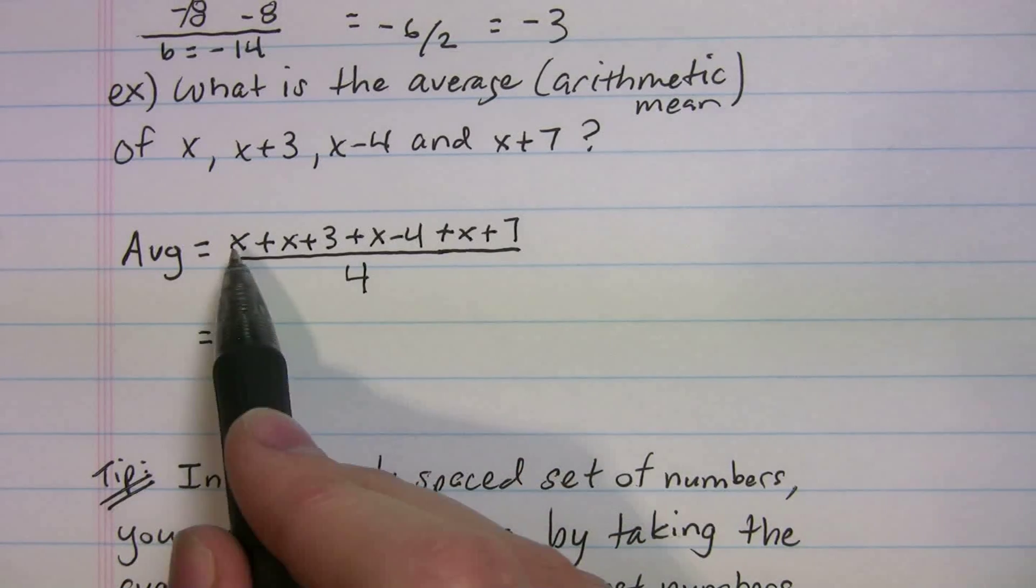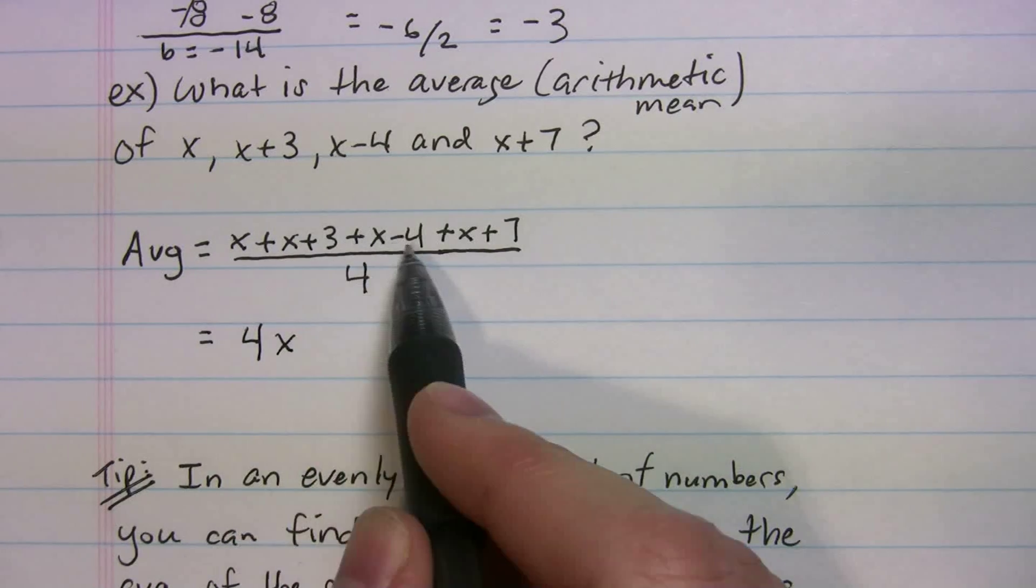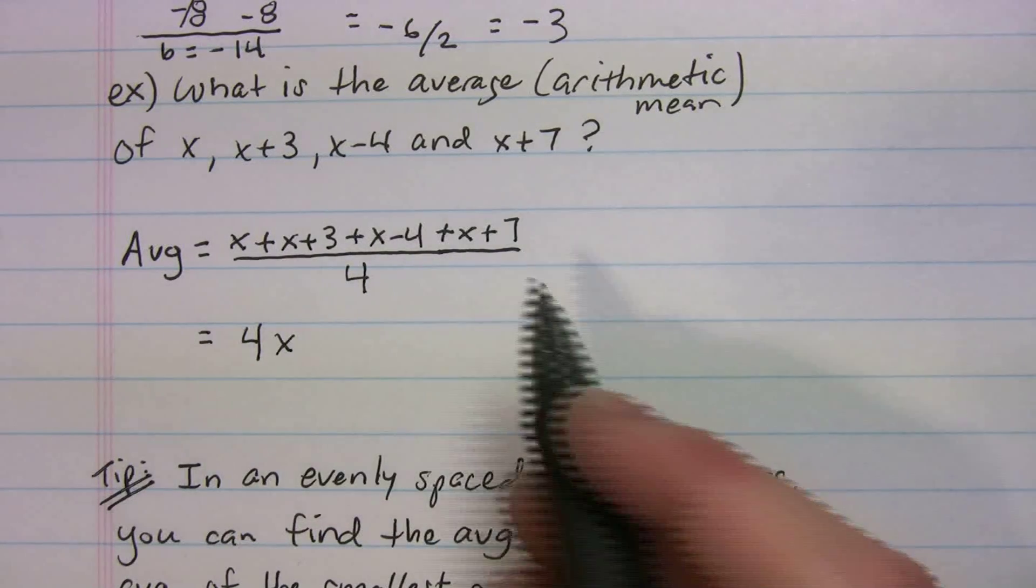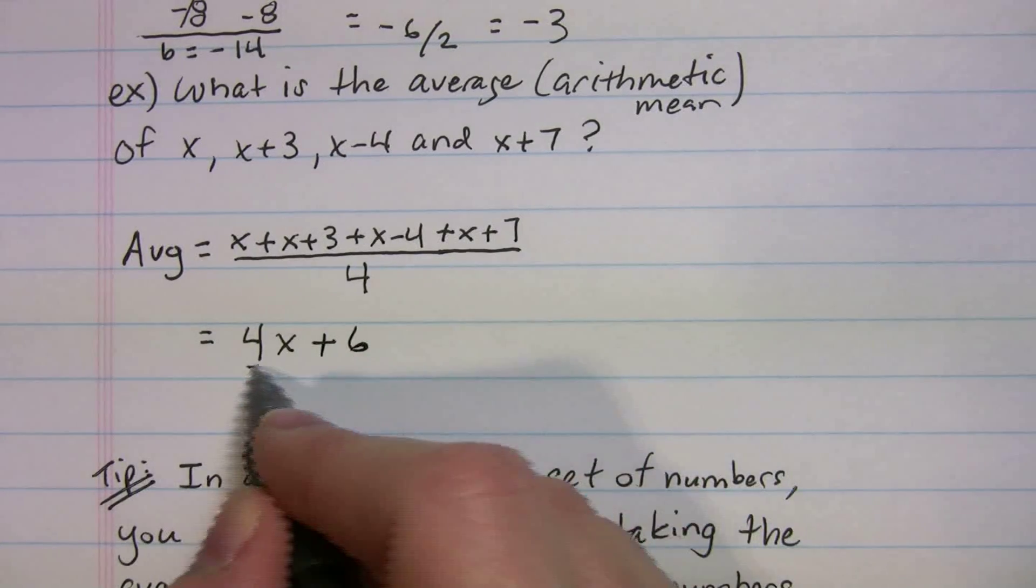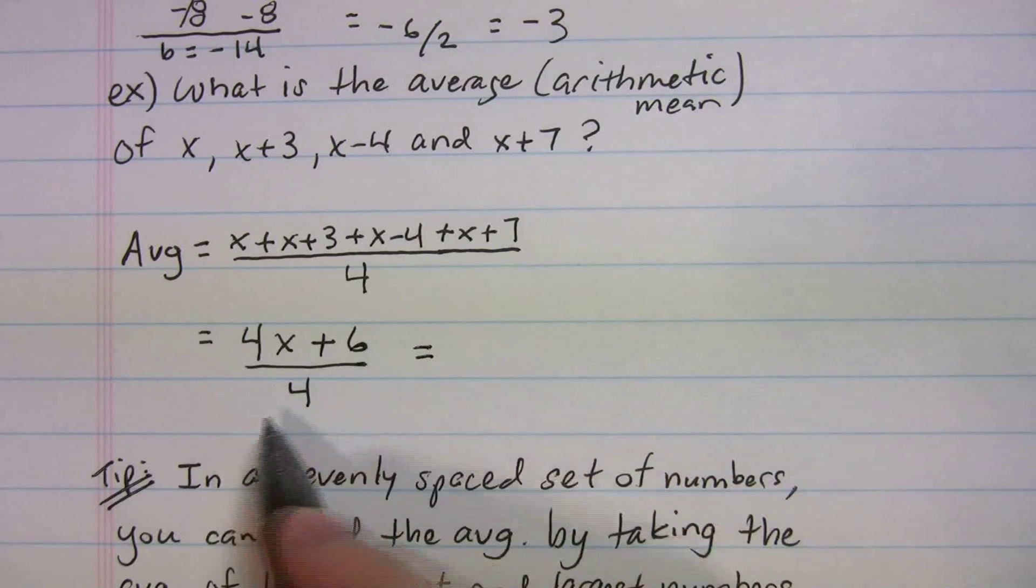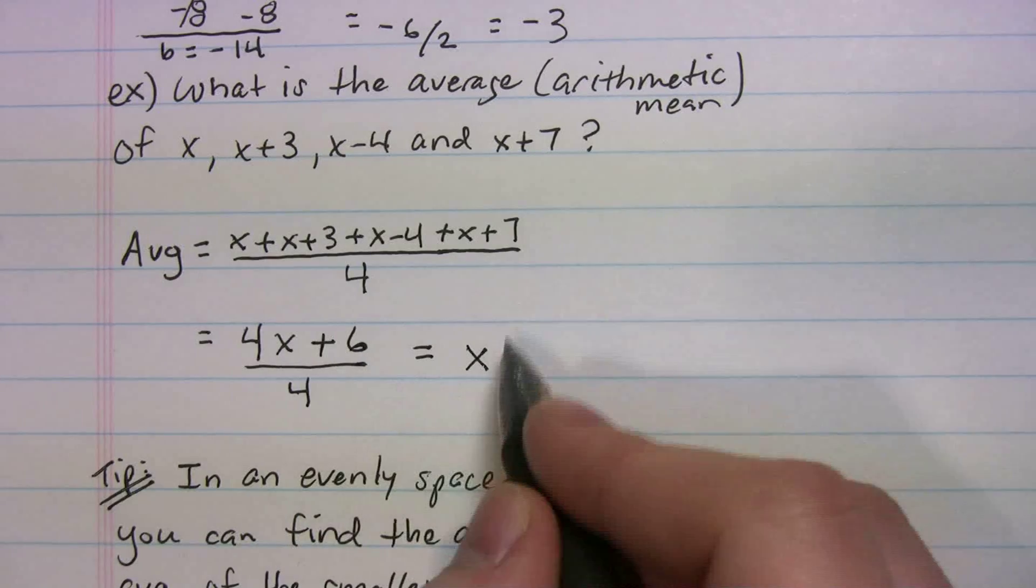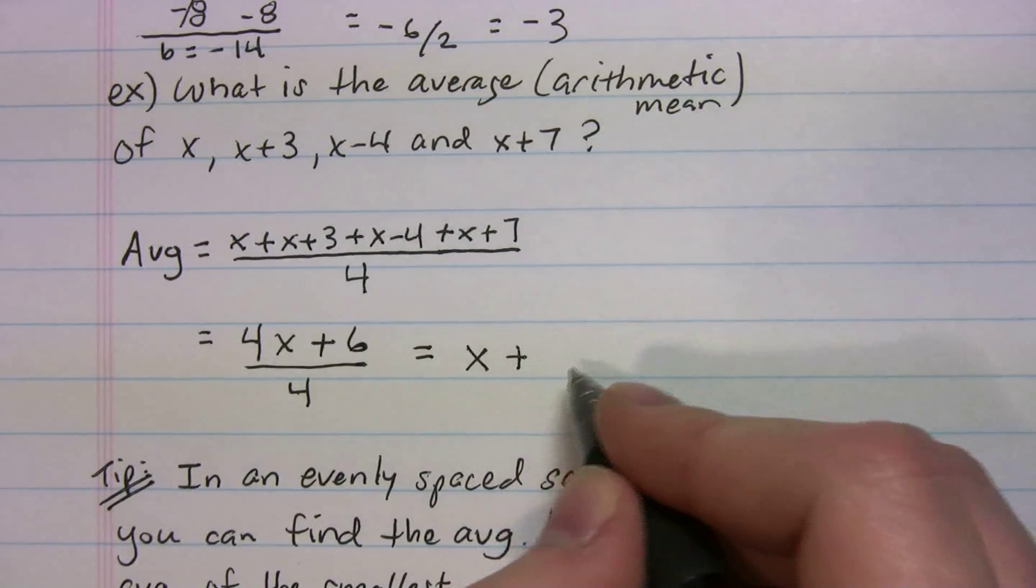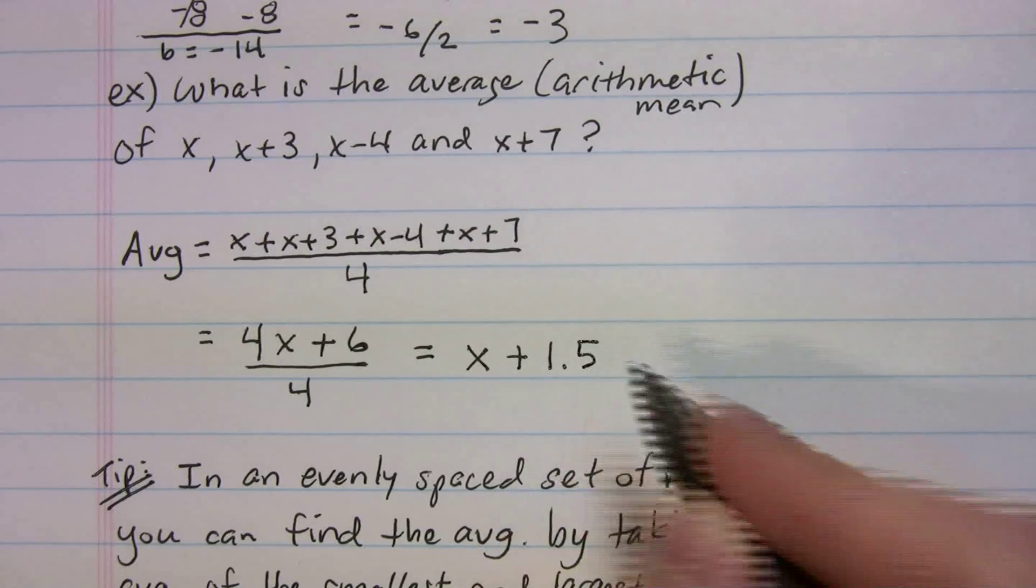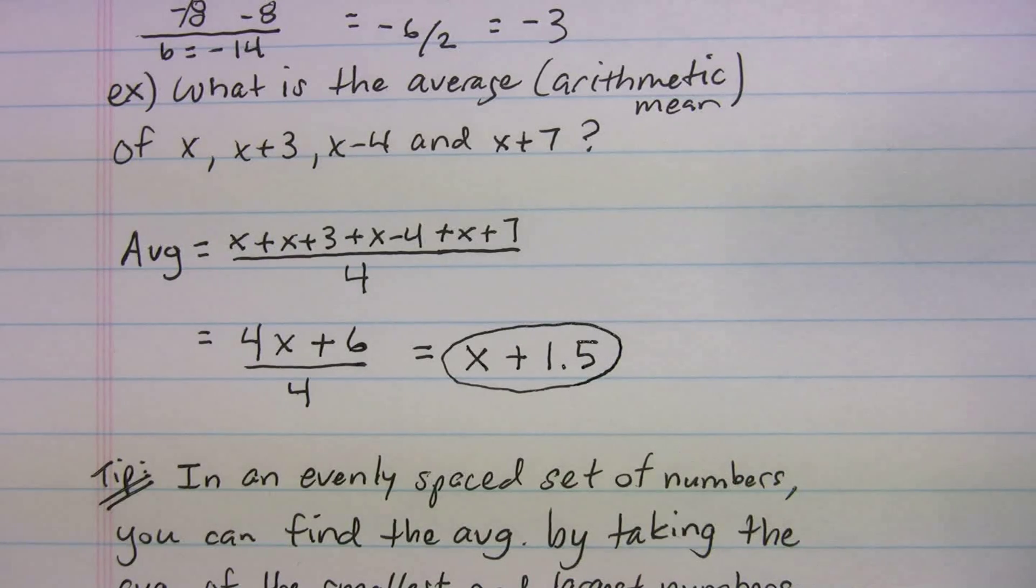So we have, let's combine like terms. We have 4x's, 3 minus 4, negative 1 plus 7 is 6. And the whole thing is going to be over 4. So that's your average. Really depending on the SAT, how they want the answer, maybe they want you to simplify this. So we might be able to say 4 into 4 goes once and 4 into 6. You can use your calculator, but if you know that 6 fourths equals 1.5 or 1 and a half, so this would be your final answer. This would be the one you'd want to circle come test day.